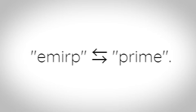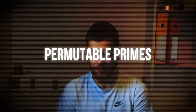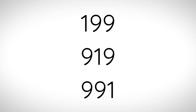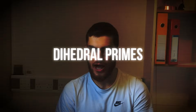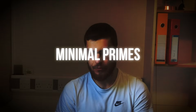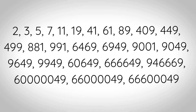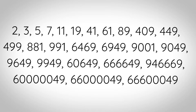Emurps: primes that become different primes when their digits are reversed — the name emurps is the word prime reversed. Permutable primes: a prime where any permutation of its decimal digits is still a prime. Dihedral primes: primes that remain prime when read upside down or mirrored in a seven-segment display. Minimal primes: primes for which there are no shorter subsequence of the digits that form a prime. There are exactly 26 minimal primes. Delicate primes: primes where having any one of their digits change to any other value will make it no longer prime.